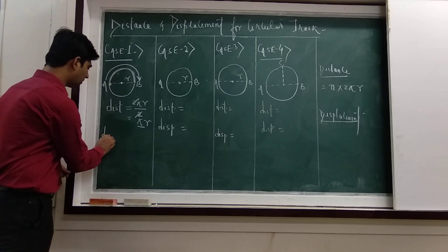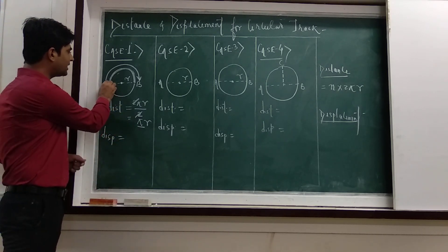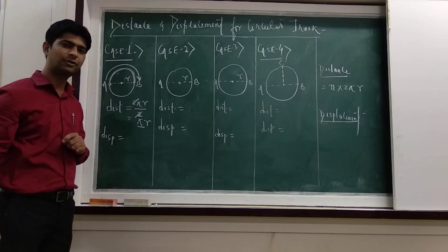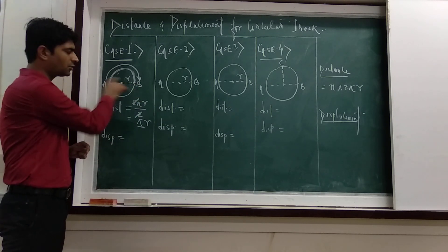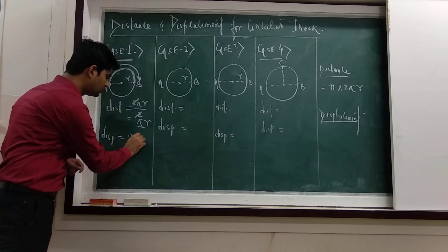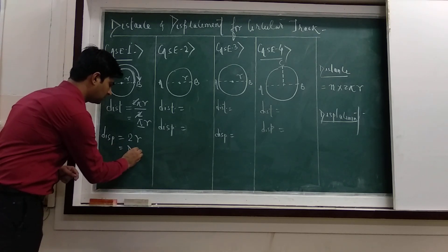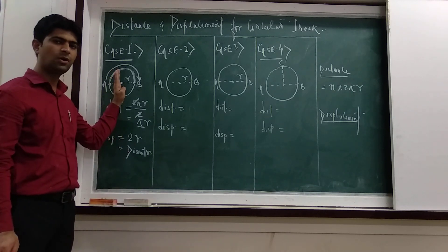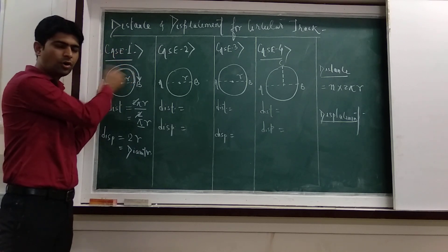For displacement in this case, we are starting from point A and ending at point B. The shortest route from point A to point B is the diameter. So the displacement will be twice of r, that is equal to the diameter of the circular path. This is case number 1, in which we move on the semicircular arc of the circular track.